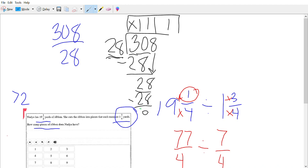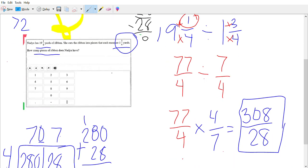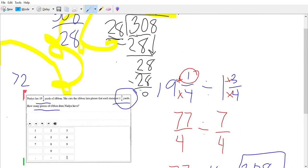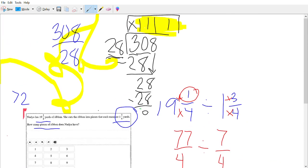So our answer, our quotient is 11. So in our question, how many pieces of ribbon does she have? She has 11. That's our answer.